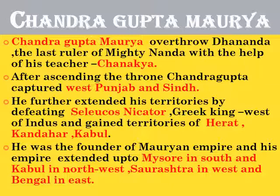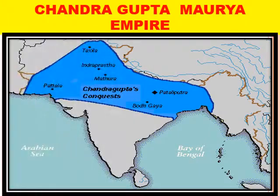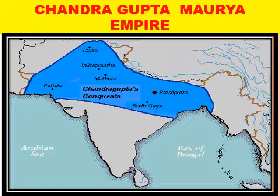In the later years of his life, Chandragupta Maurya accepted Jainism. He gave up his throne and went to south India. After that, his son Bindusara became the next ruler. You can see the empire map of Chandragupta Maurya here — initially only Pataliputra was under his control, but later he extended it to the eastern as well as the western parts of the country.